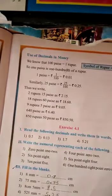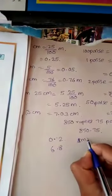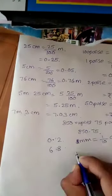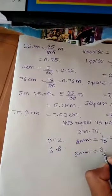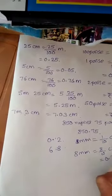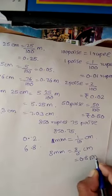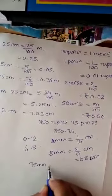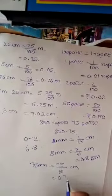Now filling in the blanks. 8 mm equals how many cm? We have 1 mm equals 1/10 cm. Therefore 8 mm equals 8/10 cm, which equals 0.8 cm. Next is 75 mm, which is 75/10 cm, equals 0.75 cm.